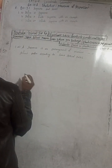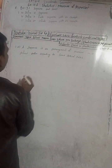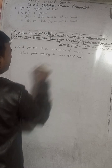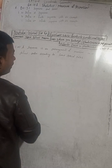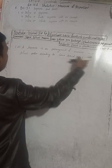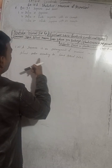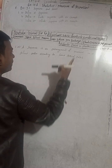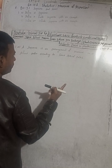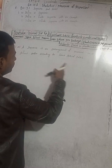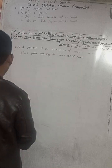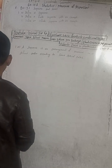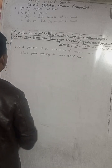A sequence is an arrangement of numbers in a defined order according to some specific rules. Now question 1b is here.